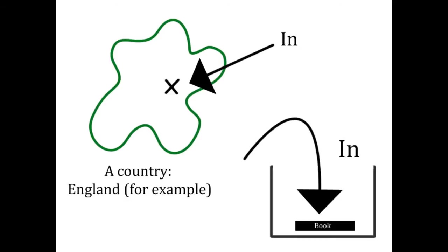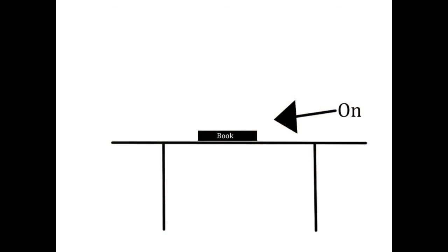However, sometimes we use it more creatively, like: I'm going on holiday in February. 'On' normally means 'on top of'. 'On' es como 'por encima de' en castellano. For example, the book is on the table.